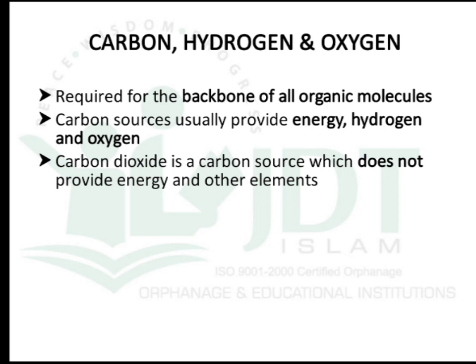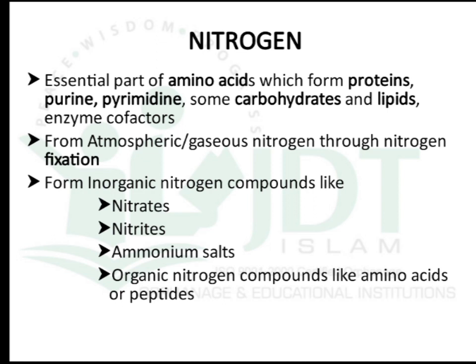Carbon, hydrogen, and oxygen are macronutrients required for the backbone of all organic molecules. Carbon sources usually provide energy, hydrogen, and oxygen. Carbon dioxide is another carbon source but does not produce energy. Nitrogen is an essential macronutrient used to form proteins, purines, pyrimidines, carbohydrates, lipids, and some enzyme cofactors. Microorganisms absorb nitrogen from atmospheric gases through nitrogen fixation, from inorganic compounds like nitrate, nitrite, and ammonium salts, and from organic compounds like amino acids and peptides.